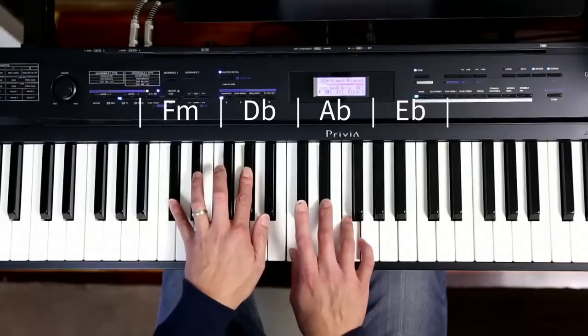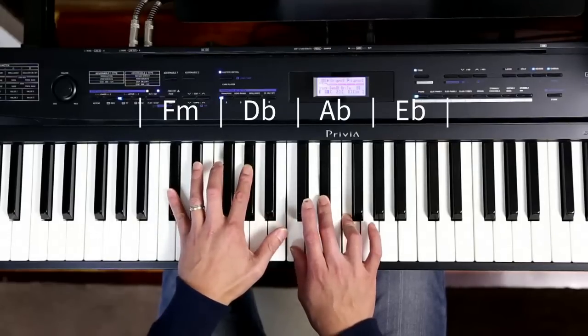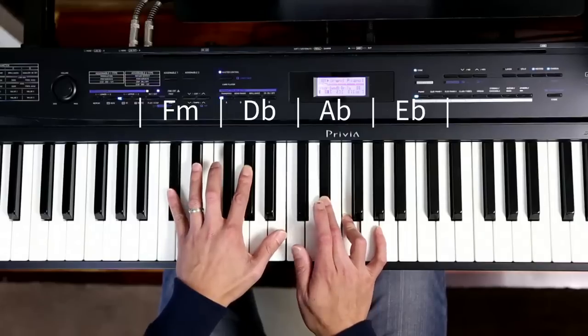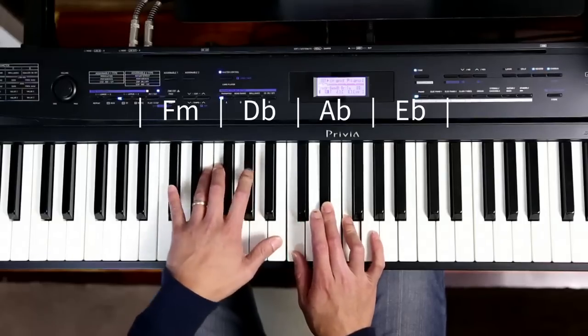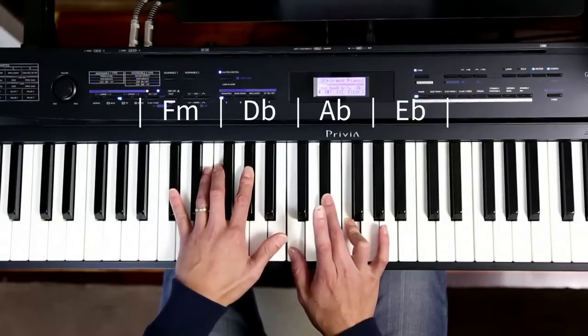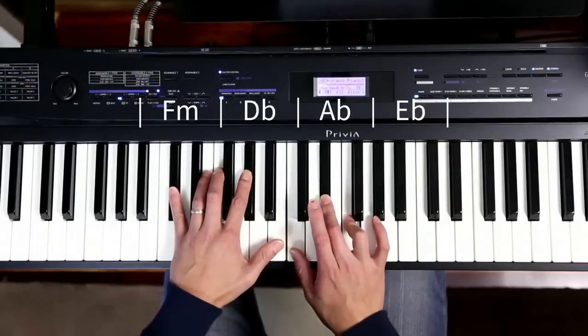For my D flat chord, I've retained the same right hand, once again for smoothness, but it also creates an interesting effect. I've got the seventh in here, I've got a two in there, so it's like a D flat major nine, because I've got the seven and the nine, or the seven and the two, but seven plus two equals nine, so it's a D flat major nine.